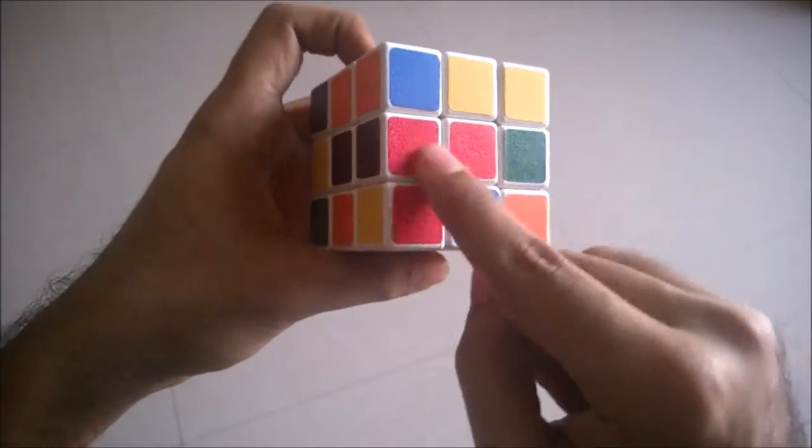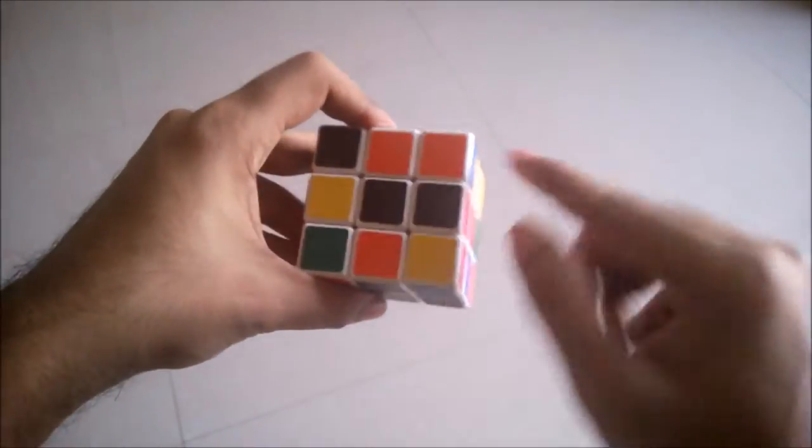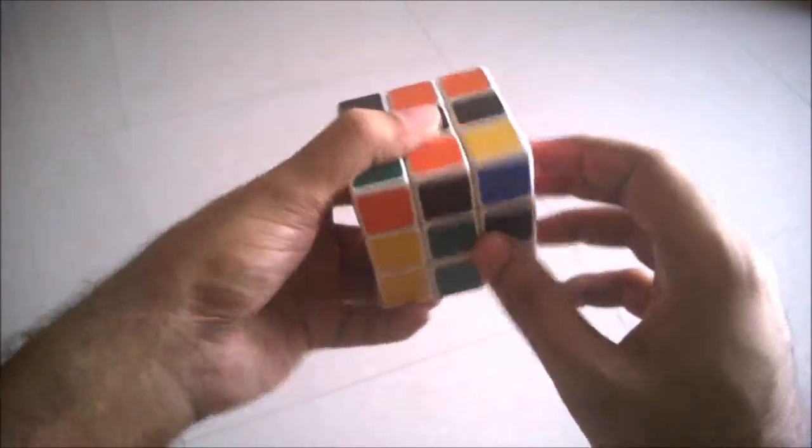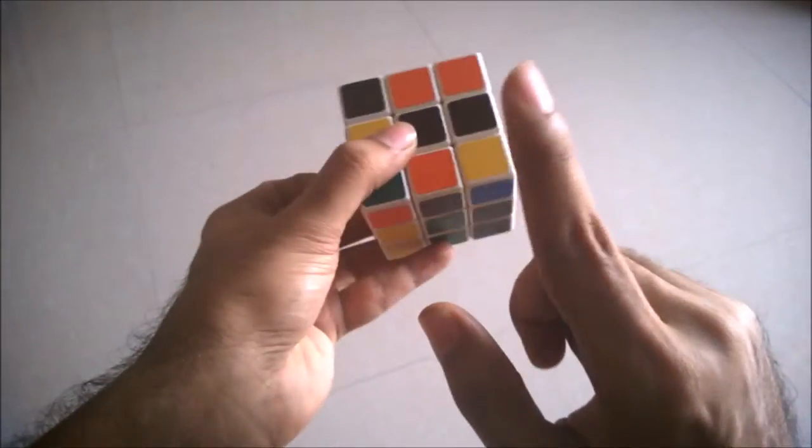So there is a combination, red and black. We want red and black to come here. So where is the red, black combination? It's just right here.